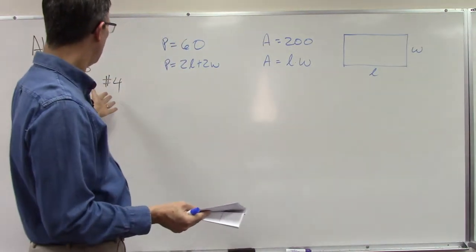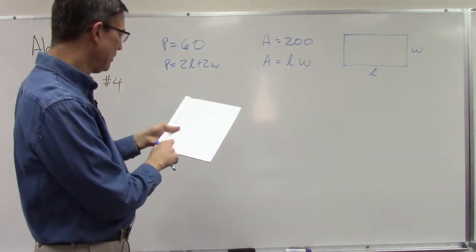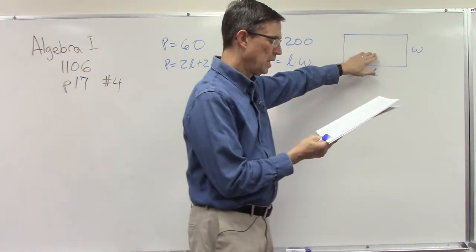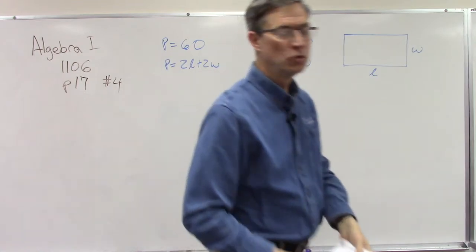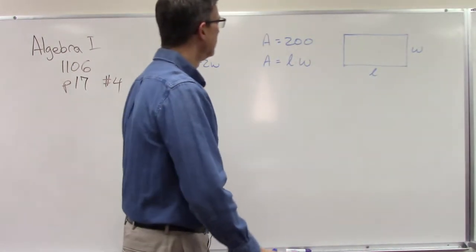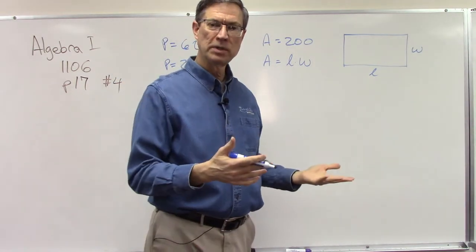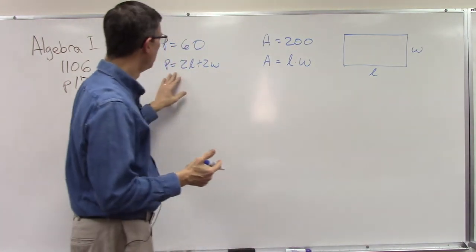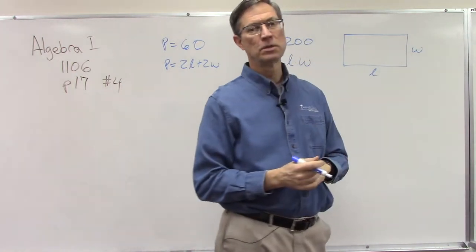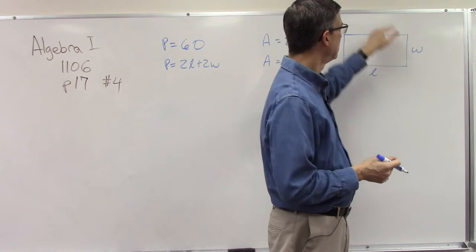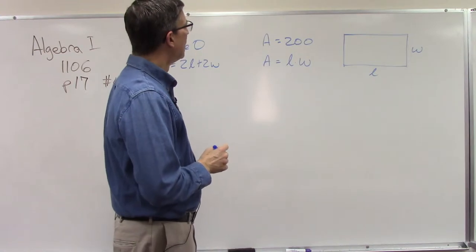This is problem number four on page 17. It says the perimeter of a rectangular field is 60 meters and the area is 200 square meters. We know that the formula for area is length times width, and that was on a preceding page if you need to look back. Perimeter is of course length plus width plus length plus width, the distance around the edge, so we have two widths and two lengths that we add together.